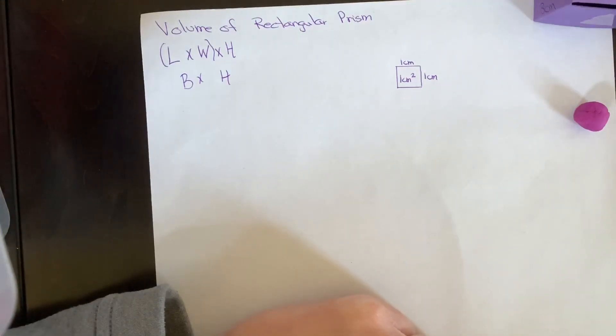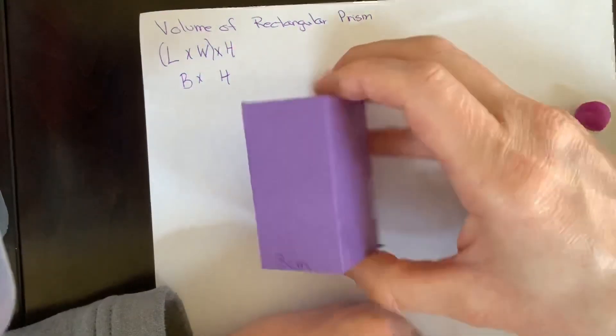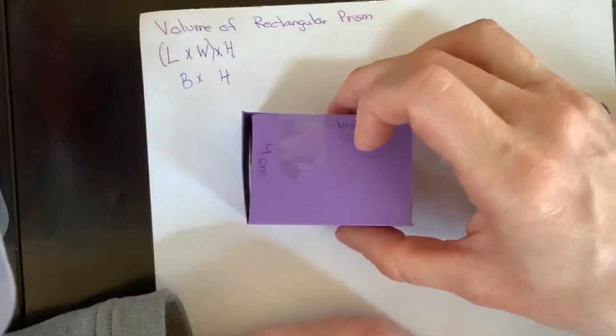Hey class, we're going to talk about the volume of a rectangular prism. So this right here is a rectangular prism. It is three-dimensional.